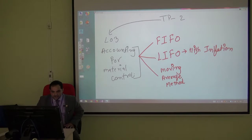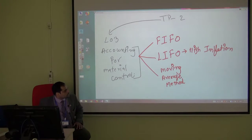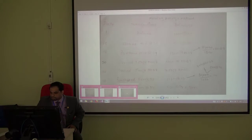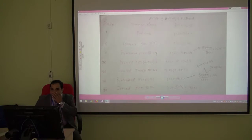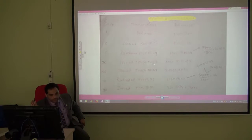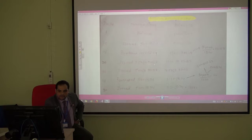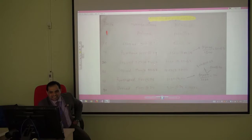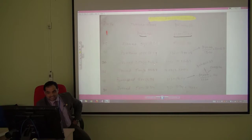Now we move on to the third method — the Moving Average method. On the first of the month, the balance is the same: 1,000 units at 20. On the tenth of the month, we issue 500, so the remaining balance is 500 at 20.